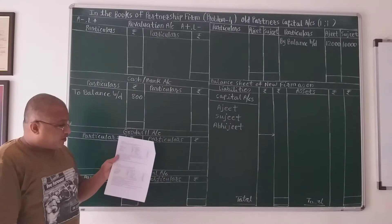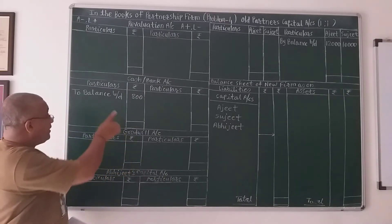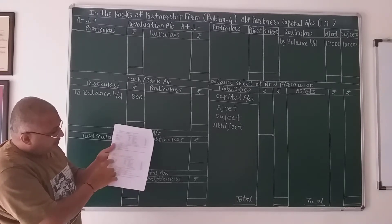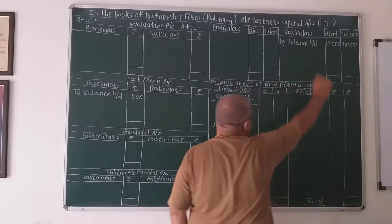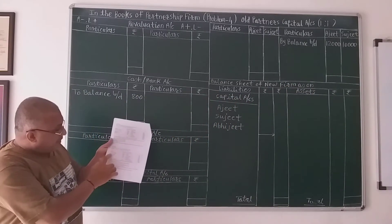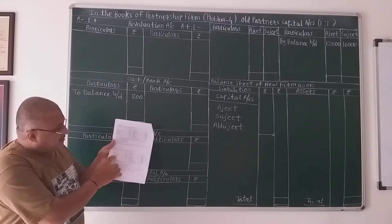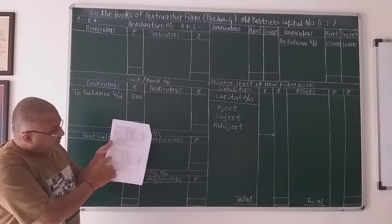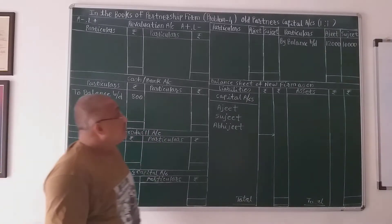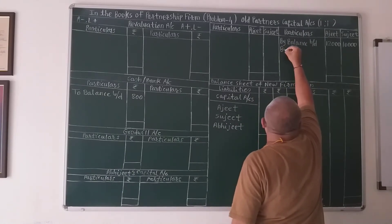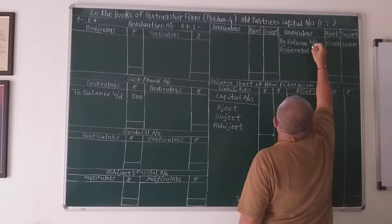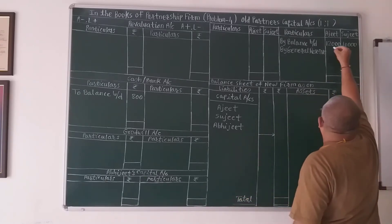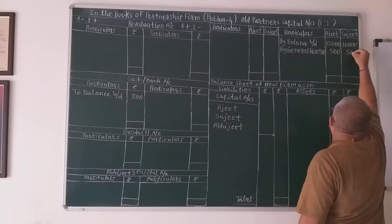First step to solve the problem: cash account is on the asset side, so cash account is recorded to balance brought down. Second step: in the balance sheet on the liability side, general reserve is given as 1,000. This general reserve has to be distributed. So old partners' capital account credit side by general reserve — distributed equally, 500 and 500.